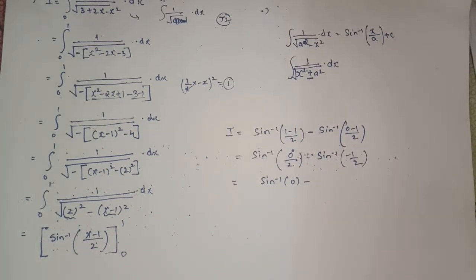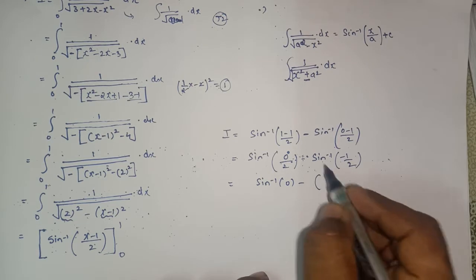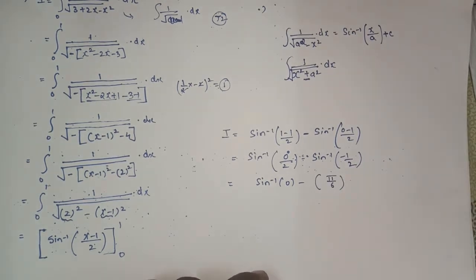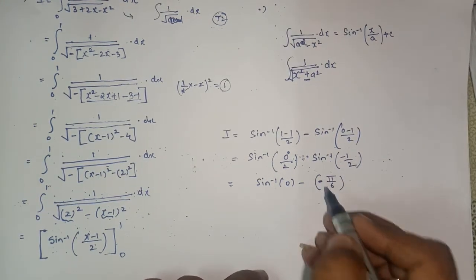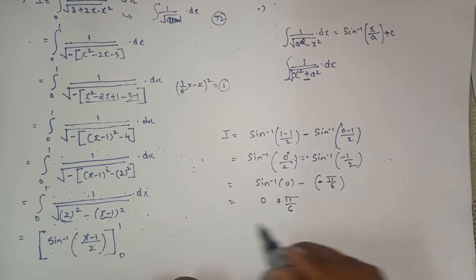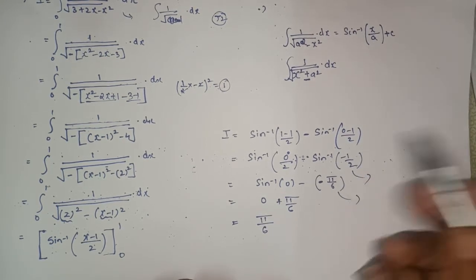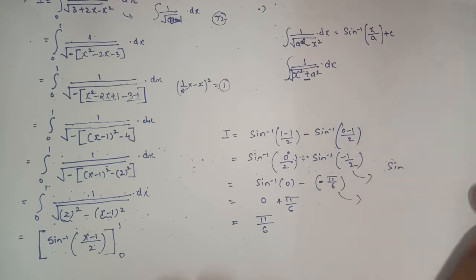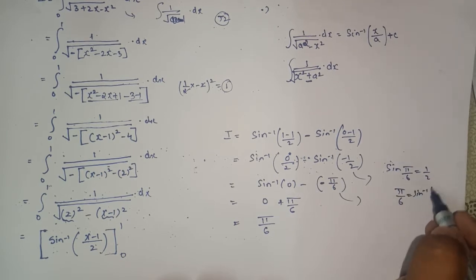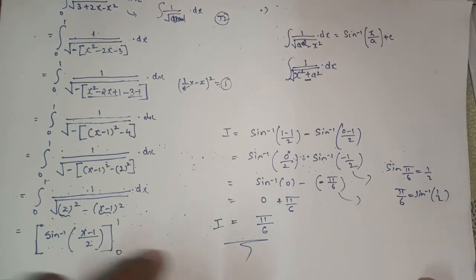Forget about this minus for a moment: sin⁻¹(1/2) is π/6 since sin(30°) = sin(π/6) = 1/2. So we have sin⁻¹(0) − (−π/6) = 0 + π/6, giving us π/6. And we must know these standard values: sin(π/6) = 1/2, so π/6 = sin⁻¹(1/2). In this way we got the final answer π/6 for this integral.